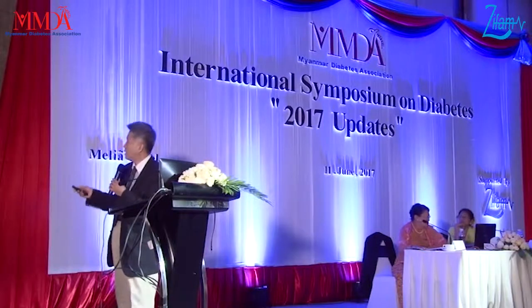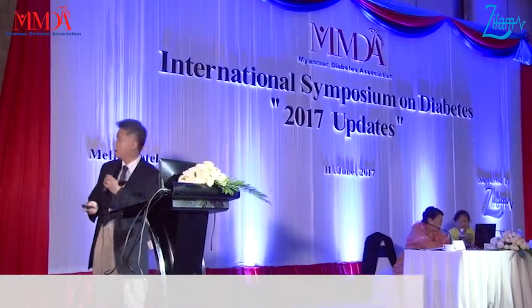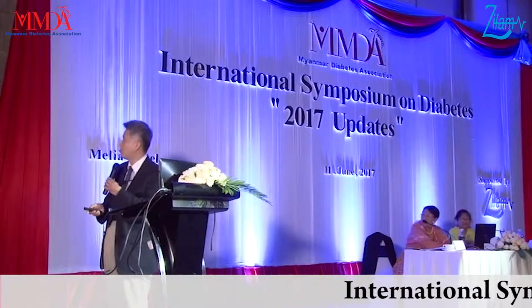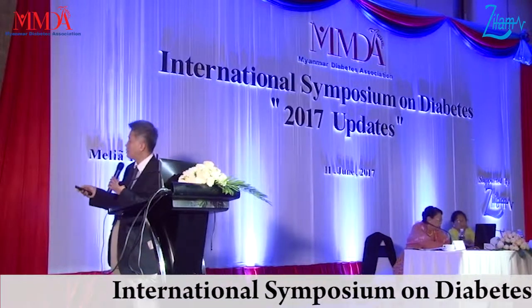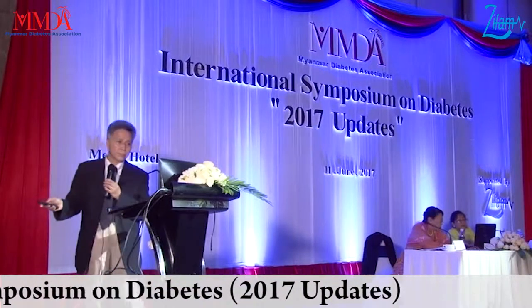In a recent study using another adult cohort, we examined 571 middle-aged individuals to look at the risk of diabetes. Everyone received the standard OGTT study, and we measured glucose area under the curve, HbA1c, and diabetes risk.